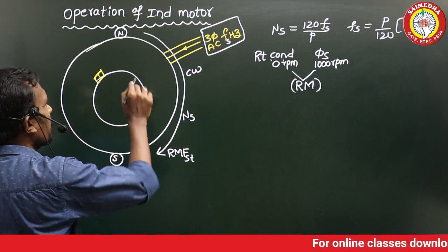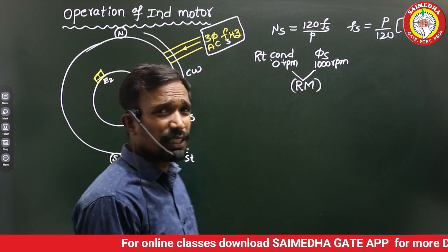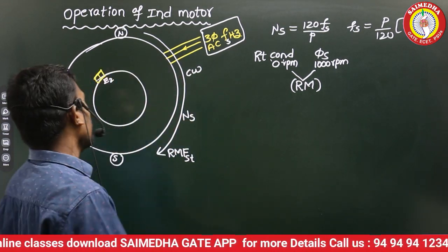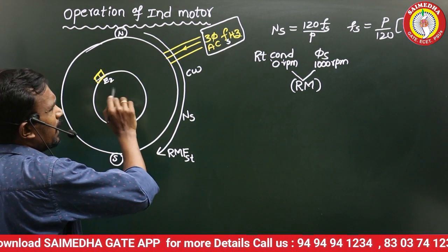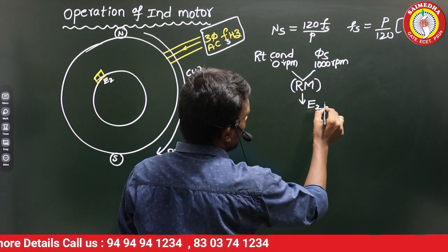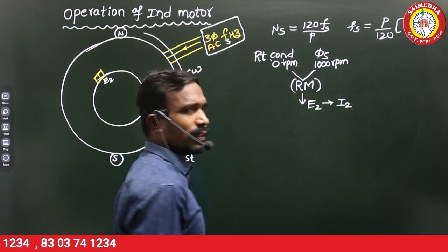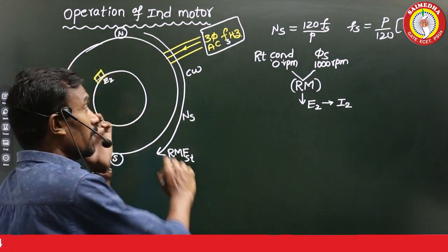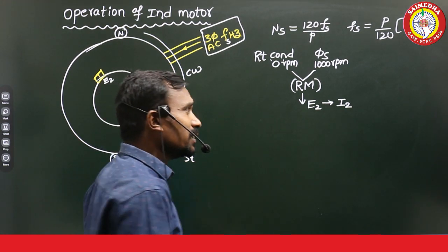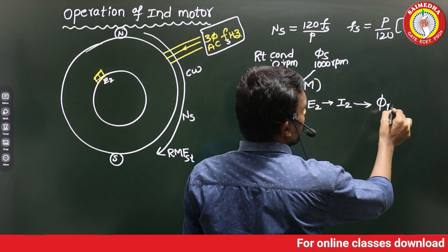Here in the rotor, EMF will be produced. The rotor is short-circuited by end rings or slip rings. Now, we have a closed path in the rotor. Due to the relative motion, EMF is induced in the rotor; due to this EMF, currents will flow in the rotor. This rotor current will produce a rotating magnetic field in the rotor.